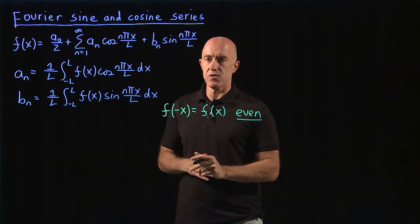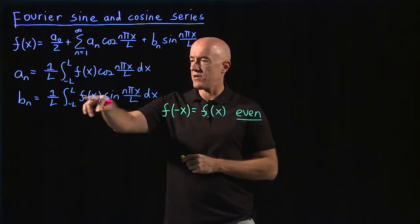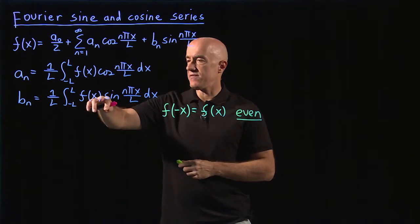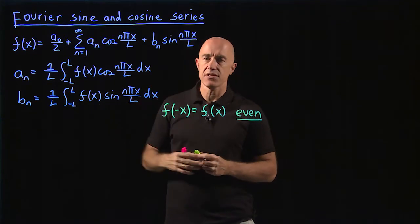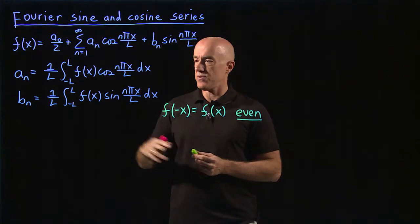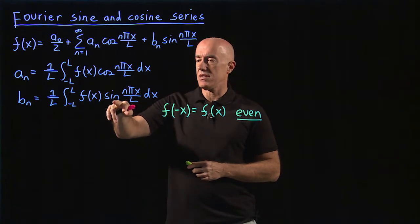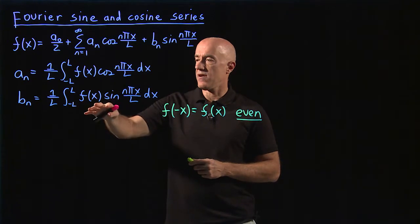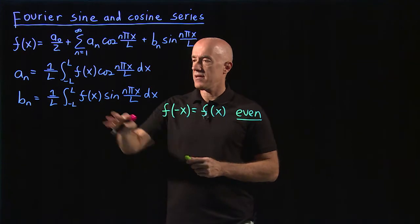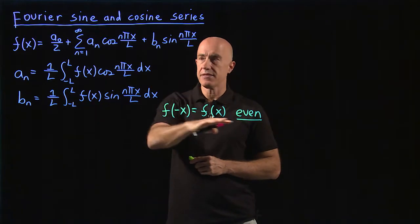And the Fourier series will then simplify. If you have an even function in this expression for the b coefficients, if you have an even function times an odd function, sine is an odd function, and you integrate that over an interval minus L to L, you will get zero. An even function times an odd function is an odd function, and the integral of an odd function symmetrically across the y axis is 0. So the b's in this case will be 0.